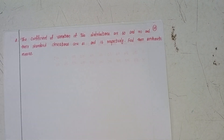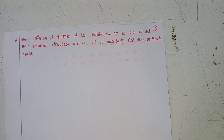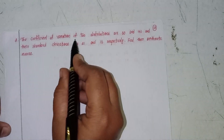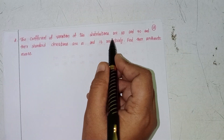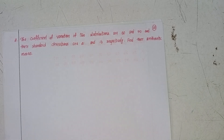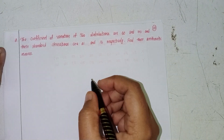Welcome back to our channel. Today we will discuss Intermediate Second Year, Chapter 8, Measures of Dispersion, Exercise 8a, third Roman numeral, second problem. The coefficient of variation of two distributions are 60 and 70, and their standard deviations are 21 and 16 respectively. Find their arithmetic means.